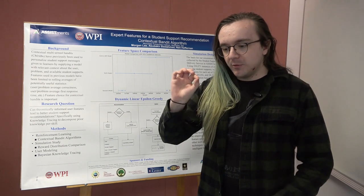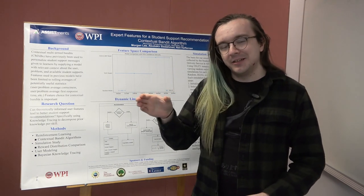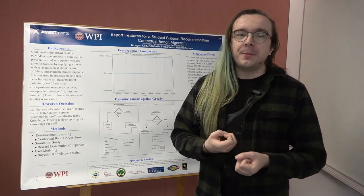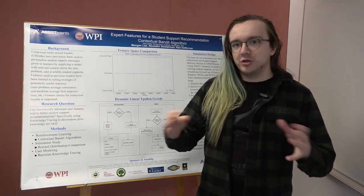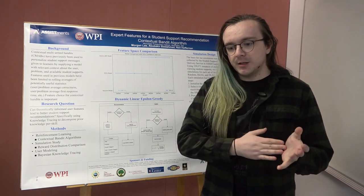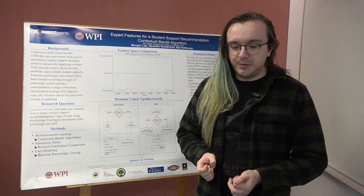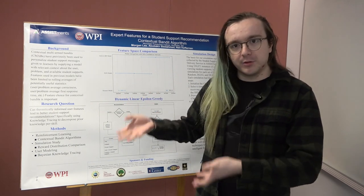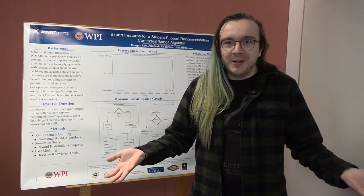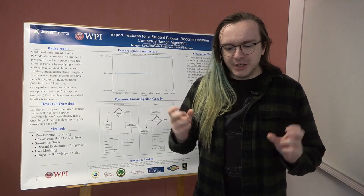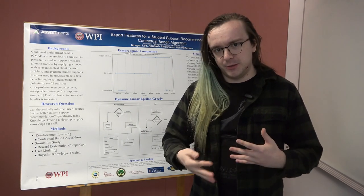Think about that user average correctness for a second. In our model that is kind of a stand-in for prior knowledge — that number is telling the model how likely a student is to know something, how much a student generally knows. But if a student is doing the first few problems on a new skill — say, the student is learning something for the first time — that number is going to be somewhat misleading, because they don't know the thing that they're trying to learn. So using user average correctness as a feature in that particular case is a messy approximation at best.